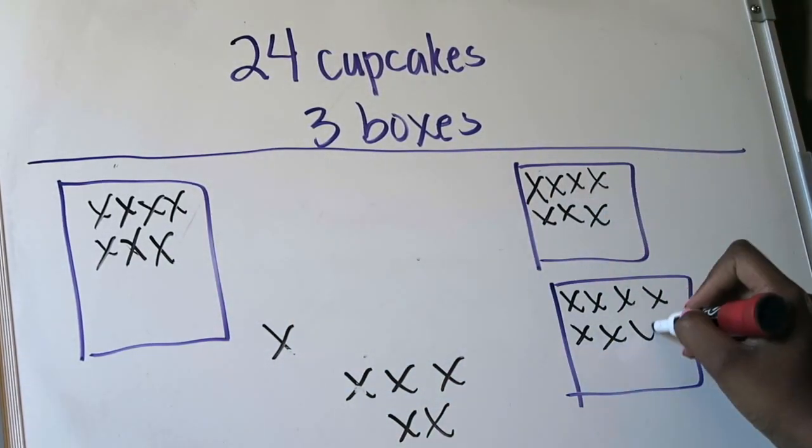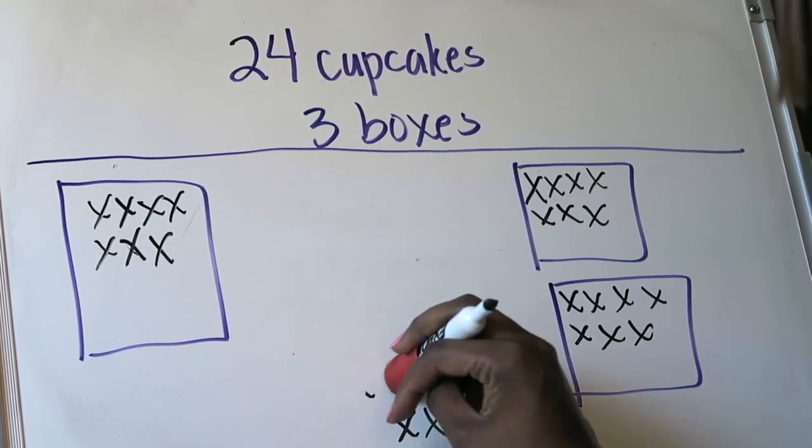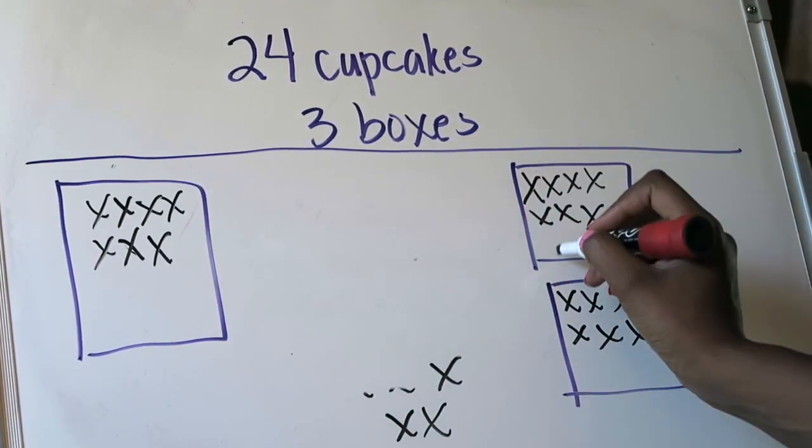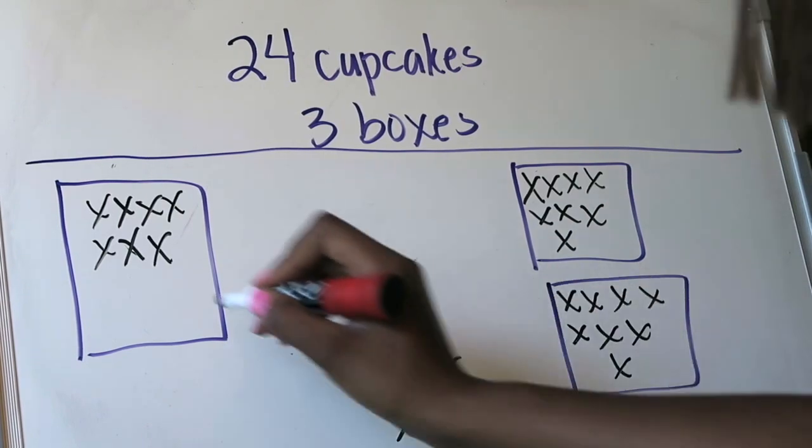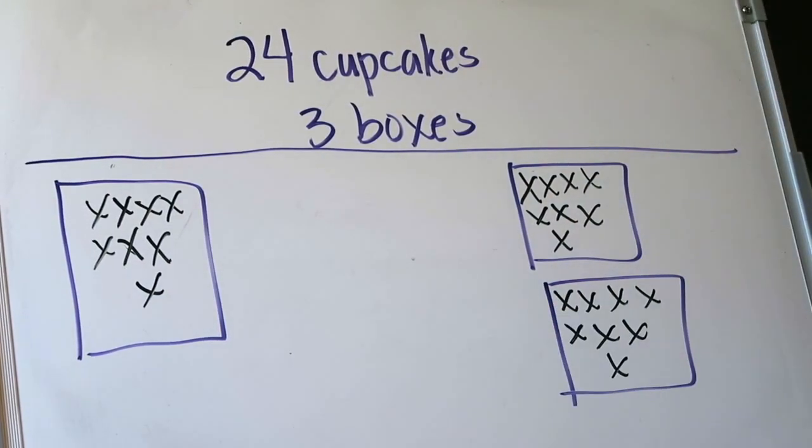One, two, three. Erase three. One, two, three. Erase another three. And then one, two, three. And then I'll erase my final three. Now notice I'm out of cupcakes.